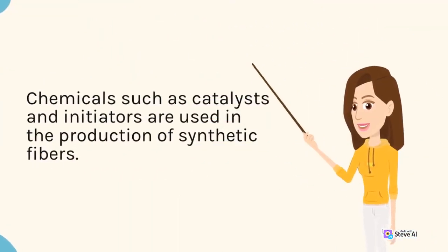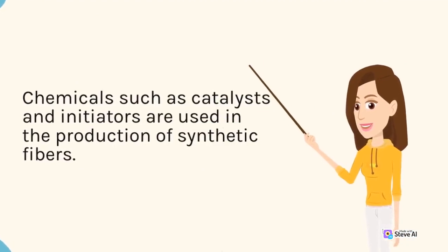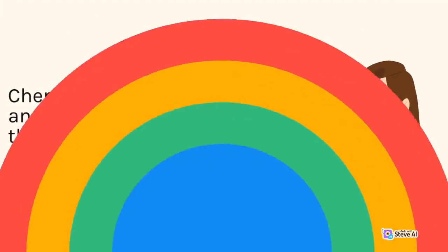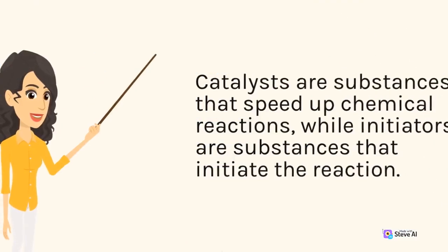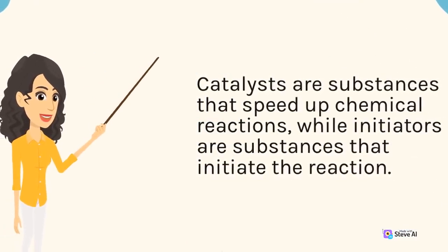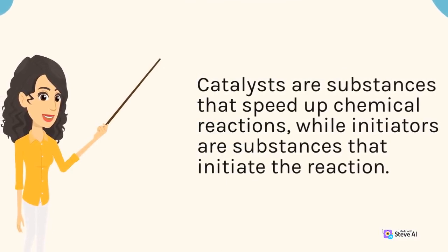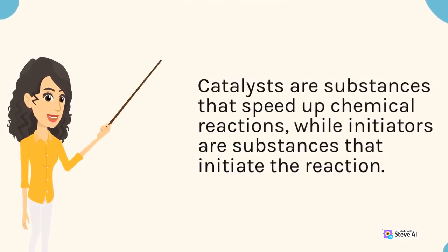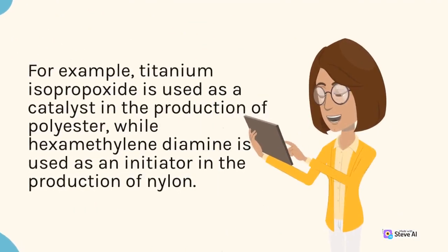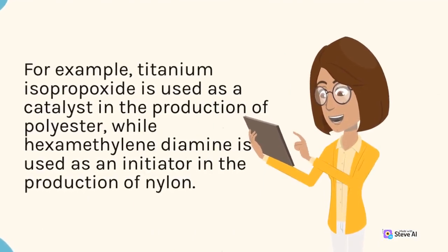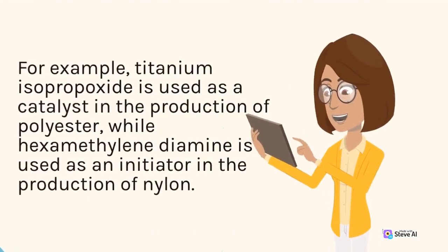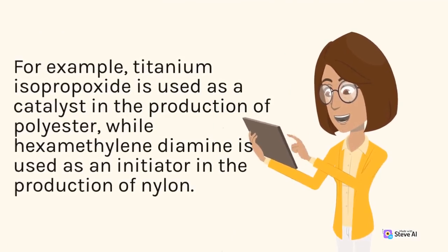Chemicals such as catalysts and initiators are used in the production of synthetic fibers. Catalysts are substances that speed up chemical reactions, while initiators are substances that initiate the reaction. For example, titanium isopropoxide is used as a catalyst in the production of polyester, while hexamethylenediamine is used as an initiator in the production of nylon.